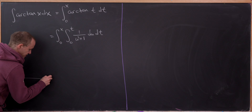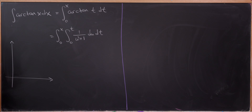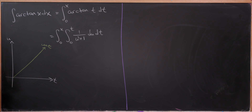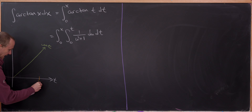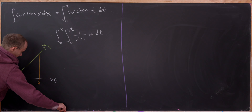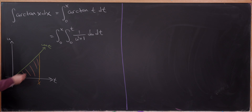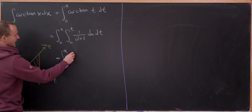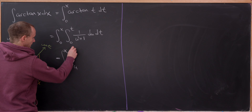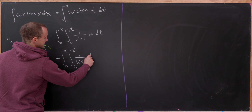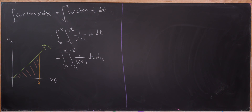Our region of integration is a little bit simpler to work with here. Let's again say this is the t-axis and this is the u-axis — we need the line u equals t again. The u values go between 0 and t, and the t values go between 0 and x. The region we're integrating over is this triangle. Switching the order of integration gives: the integral from 0 to x, then u to x, of 1 over u squared plus 1 dt du.